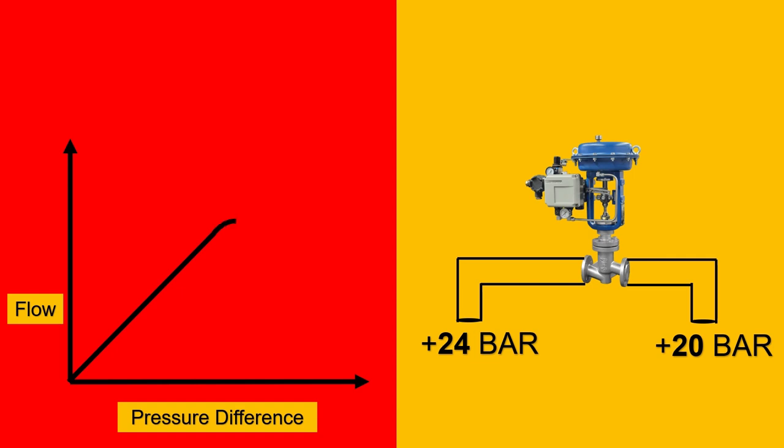But then after a point of time, you would see that the curve is getting saturated and even though I'm increasing the pressure, there is no change in the flow. Ideally, this should have been the characteristics, right? Which we call as maybe the ideal flow characteristics.